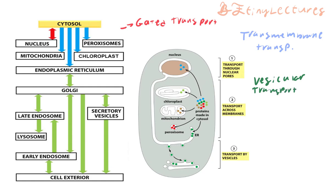Vesicular transport is the type that can take things in from the outside or release them into the external environment. For instance, insulin — when it needs to be released from the cell — will transport itself in little vesicles, which are like the 18-wheelers that transport materials from the cell.